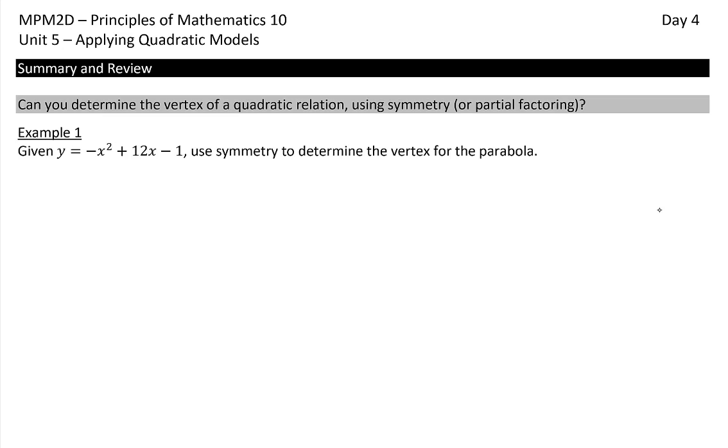So remember our first step when using symmetry is to let y equal negative 1. Sub that into our equation. We get negative 1 equals negative x squared plus 12x minus 1. We rearrange so that one side has 0. We remove the common factor, which is negative x, and that leaves me with x minus 12.